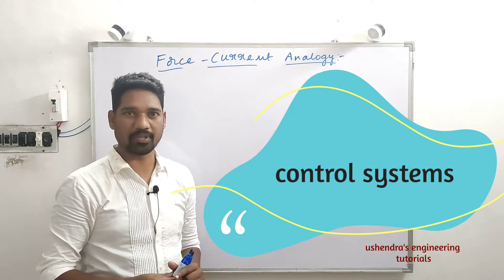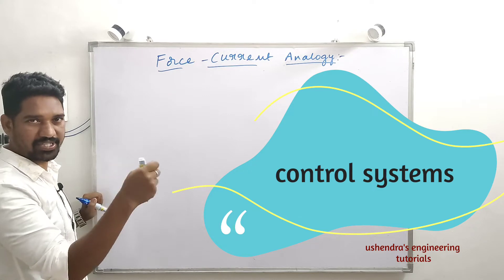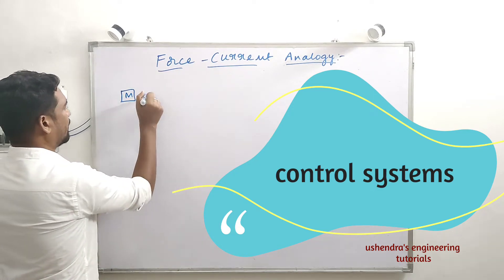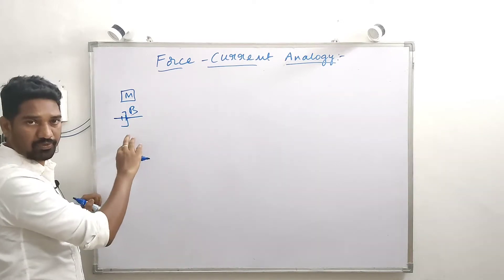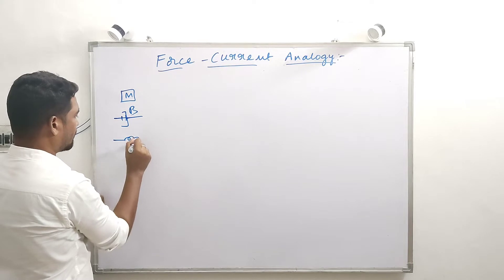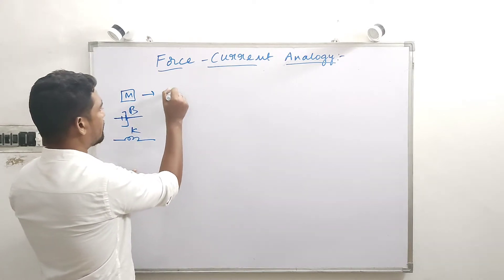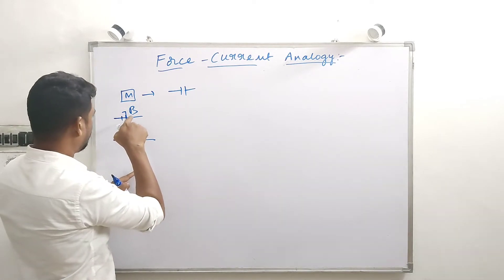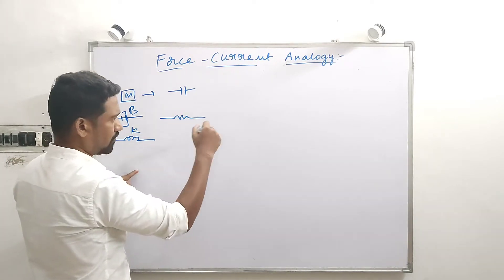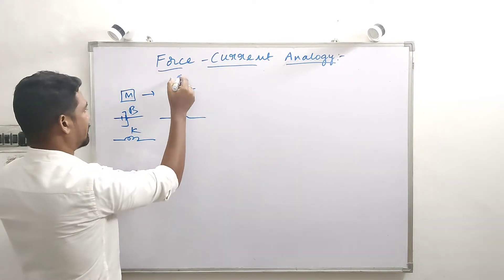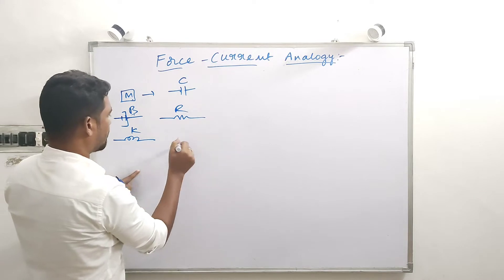This is the force-current analogy. There are three elements of mechanical systems: mass, dashpot indicating friction between moving parts, and elastic constant (spring). With the force-current analogy, mass is analogous to capacitor C, dashpot B is analogous to resistor R, and spring constant K is analogous to inductor L. We replace the voltage and current equations accordingly.